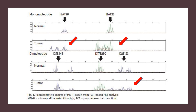In this figure, BAT-26 and BAT-25 seem to show unstable peaks, and D2S123 also seems unstable. By the way, my interpretation seems unstable — I am not a pathologist.